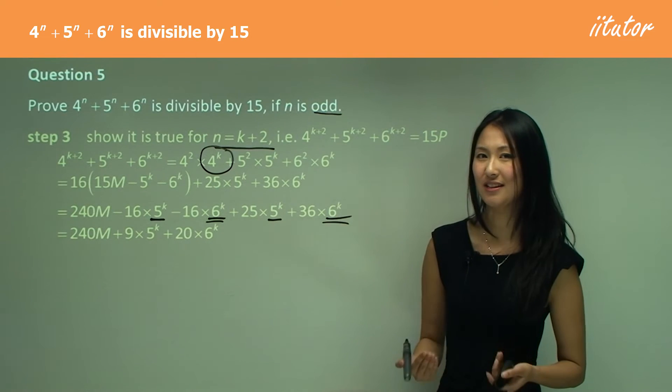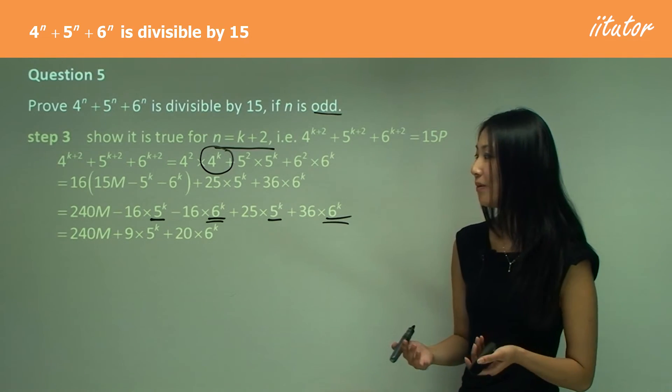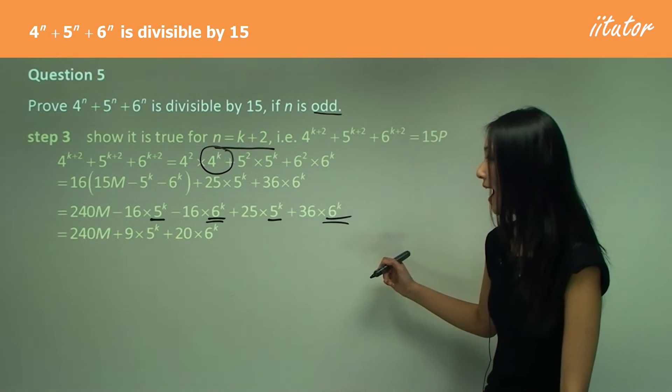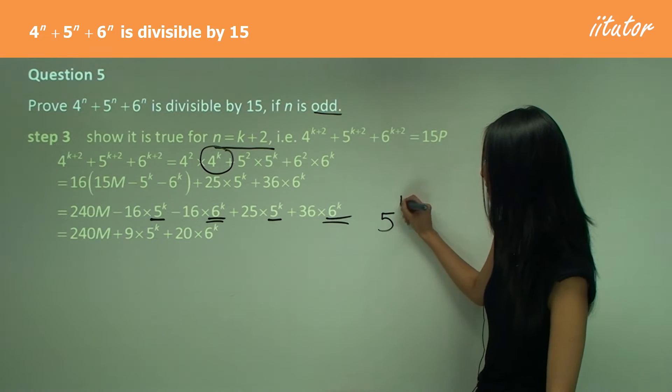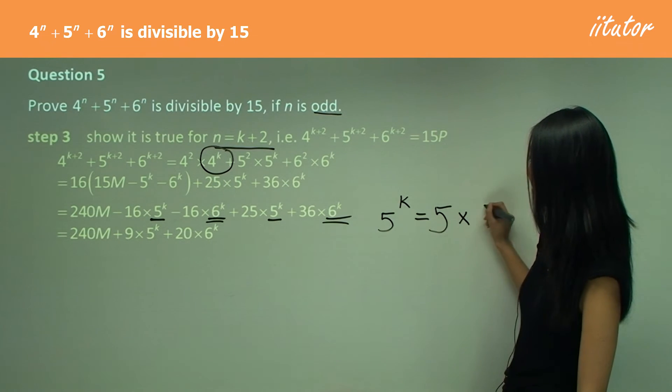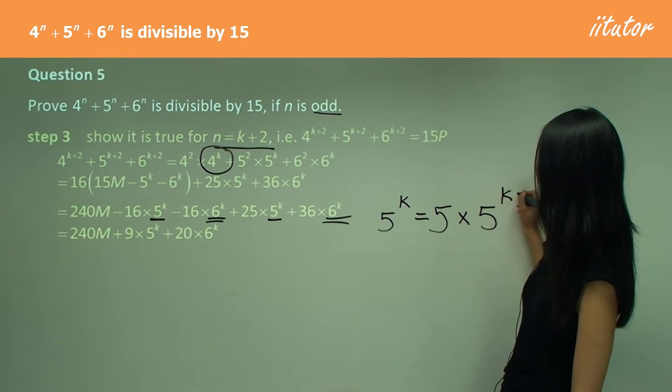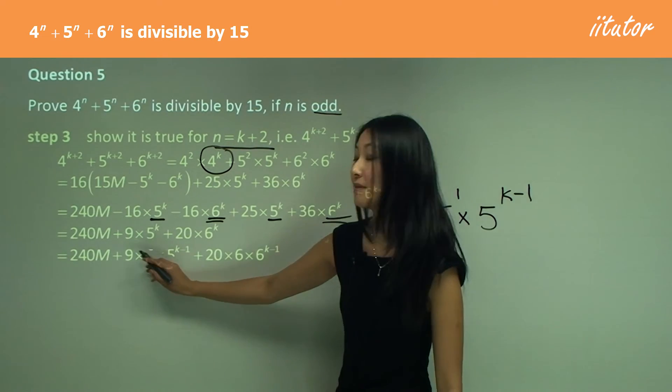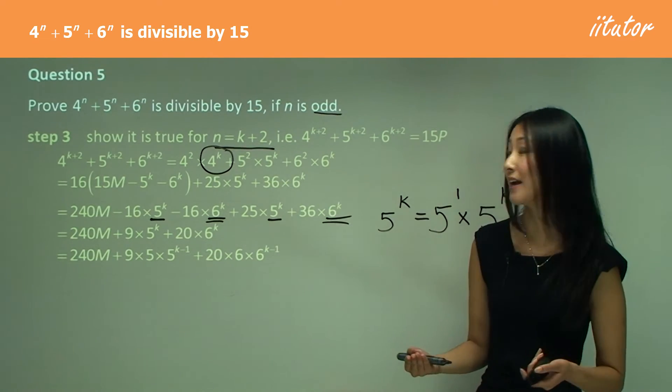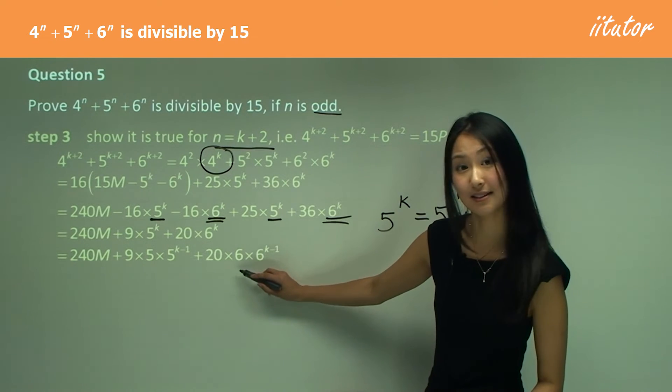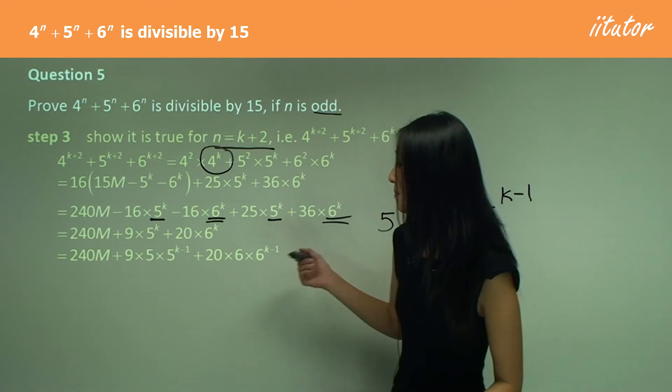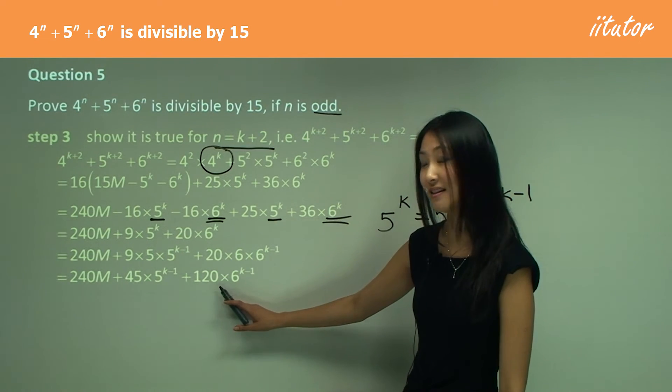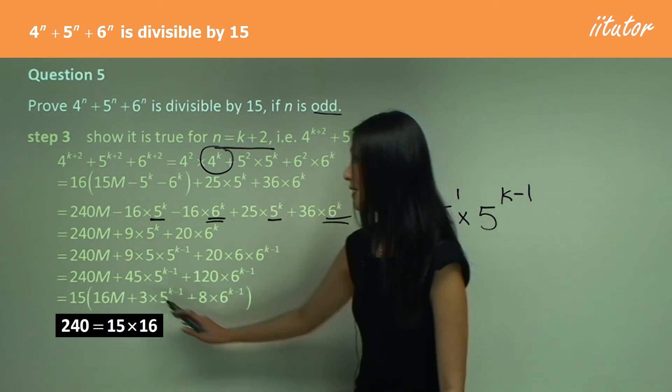The only thing you can do is take a 5 out of there. What I mean is you can make 5^k equal to 5 times 5 to the power of k minus 1. So I'm taking this 5 out. If I do that, then I can multiply that and hope we can divide it by 15. I've taken the 6 out of there as well in the same way. By multiplying them together, this gives me 45, and this gives me 120. So you can see that yes, we can take out the 15.